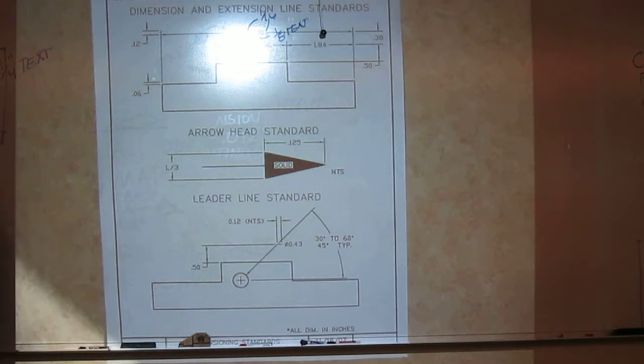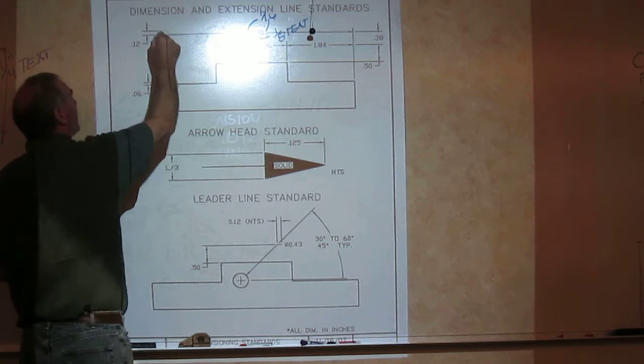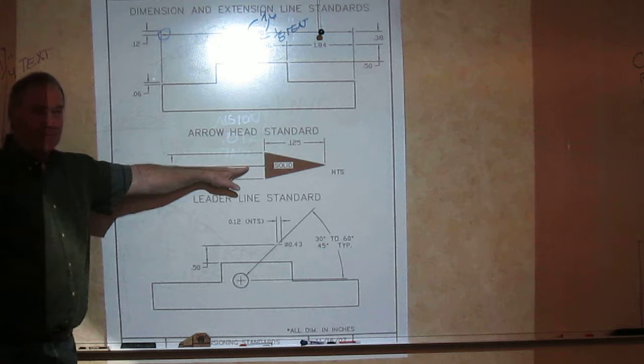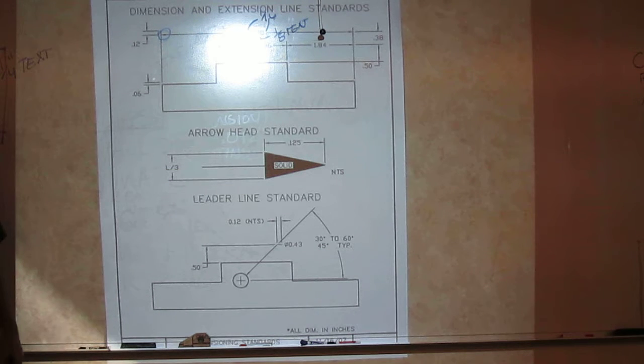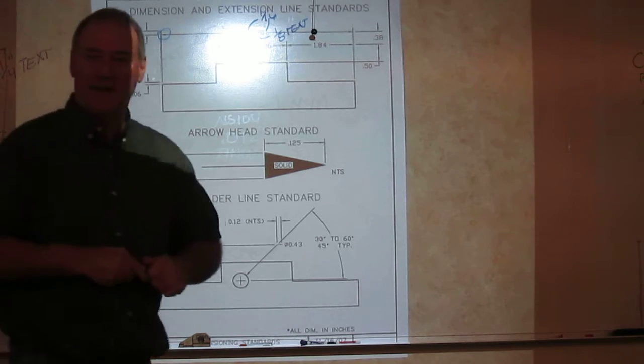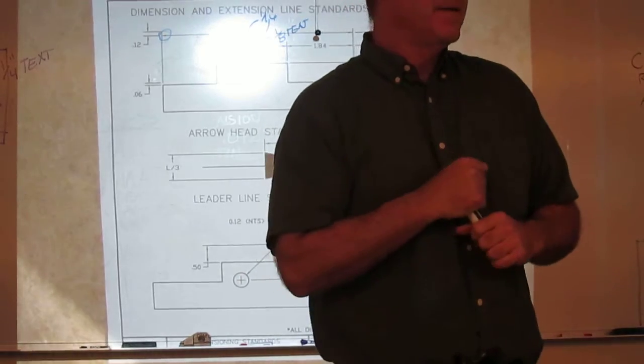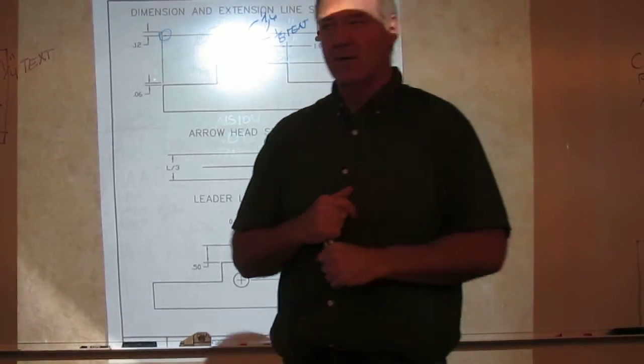You will also have a termination symbol on a dimension line. The ANSI standard is this one right here. I've given you a blow up of the arrow here in the middle. Notice the size of it. It's just like the one we've made before for a cutting plane line, except that it's half the size. This is the ANSI standard. It's a closed field arrowhead.